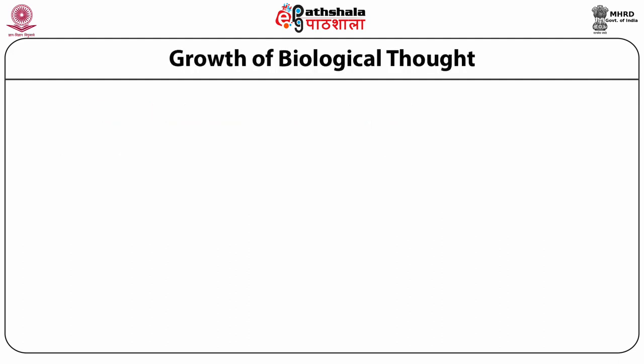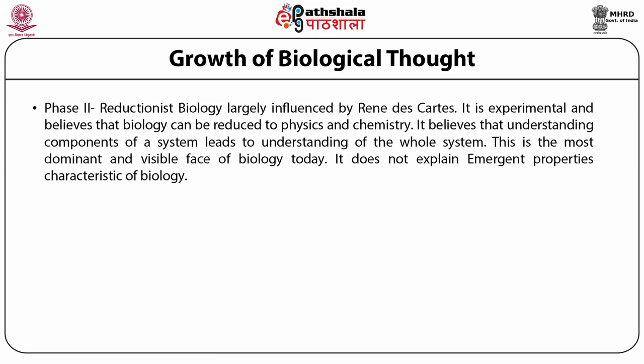As mentioned earlier, the classical phase was essentially descriptive. However, around the 17th century, there was a French mathematician called René Descartes. Because of his influence — he is also the first philosopher of science and a self-styled biologist — there was a new phase of biology called reductionist biology. This is largely influenced by René Descartes and his ideas. It is experimental, and as instructed by him, people started using the concepts and techniques of physics and chemistry and applied them to biology. We popularly say that biology can be reduced to physics and chemistry — hence it is called reductionist biology. This phase believes that understanding the components of a system leads to understanding of the whole system. This is the most dominant and visible phase of biology today, but it does not explain emergent properties and characteristics of biology.